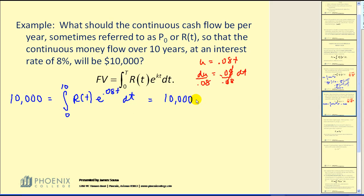We can factor out the R of T. Now remember that when we replace D of T, we're going to get a DU divided by .08, which I can factor out.